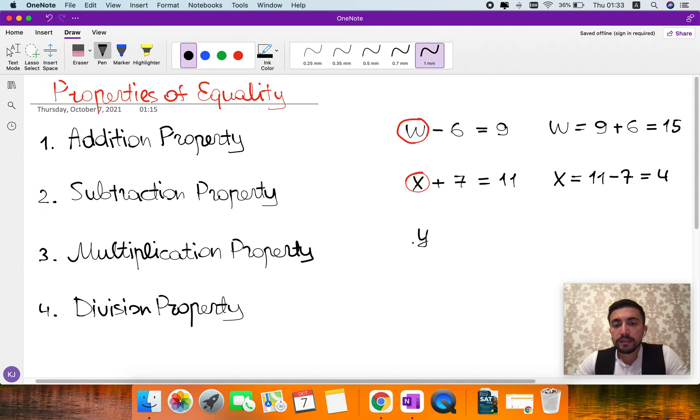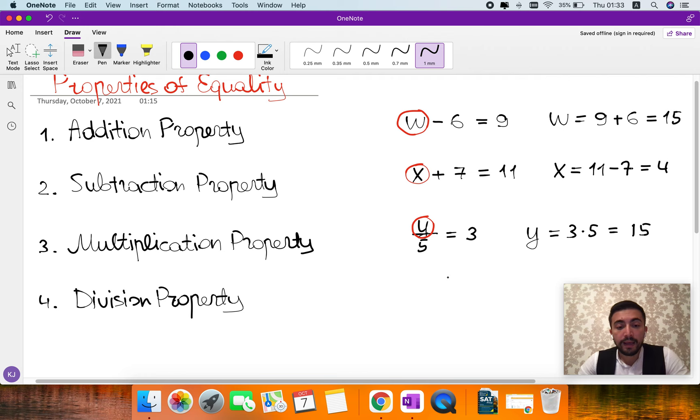Say Y divided by 5 equals 3. Again, we need to isolate the variable Y. To do this, as you can see, we need to multiply both sides of the equation by 5. If we do this, we will get rid of the denominator. We will get Y equals 3 times 5, which makes 15.